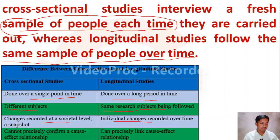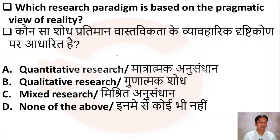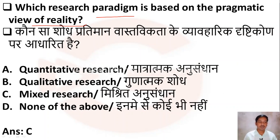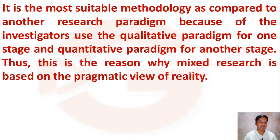Cross-sectional studies cannot precisely confirm a cause-and-effect relationship, whereas longitudinal research can precisely link cause and effect. The next question: which research paradigm is based on the pragmatic view of reality? Option A: quantitative research, Option B: qualitative research, Option C: mixed research, Option D: none of the above. The correct answer is Option C — mixed research.